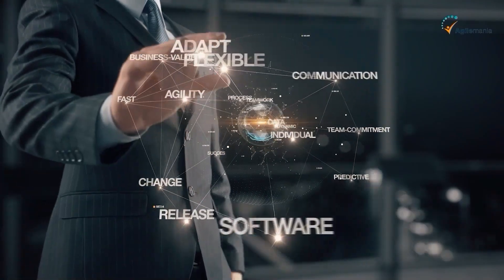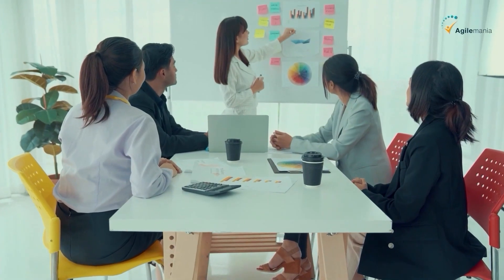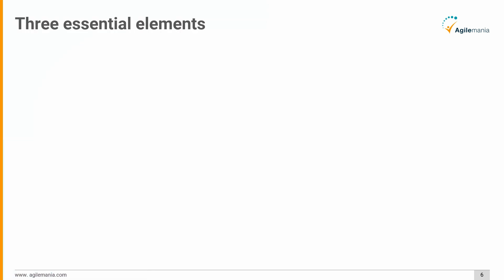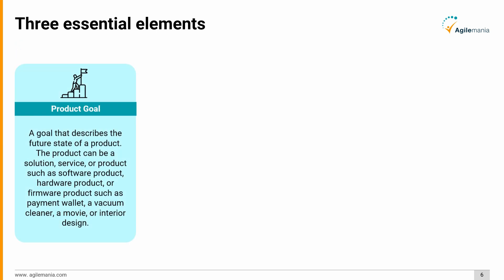We need a few things to start our first sprint, organized in two categories: essential elements and acceptable practices. The three essential elements are: first, product goal — a goal that describes the future state of a product. The product can be a solution, service, or product such as software, hardware, or firmware — for example, a payment wallet, a vacuum cleaner, a movie, or interior design.